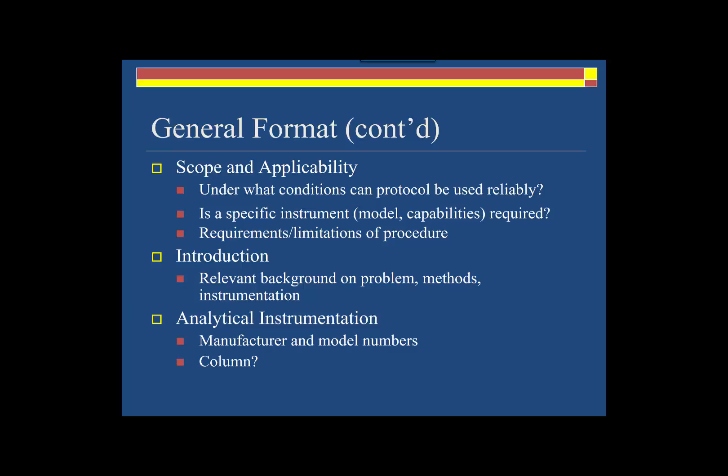Next, the SOP should have a brief introduction. This section should introduce the problem that requires the use of an SOP, the methods that are going to be used, and the instrumentation. Any analytical instrumentation should include the make and model of the instrument. If you're using a separations-based scheme, then the specific column chemistry should be outlined, and if there are several different manufacturers or columns that could be used to obtain the specific quality of results, those columns should be specifically identified here.